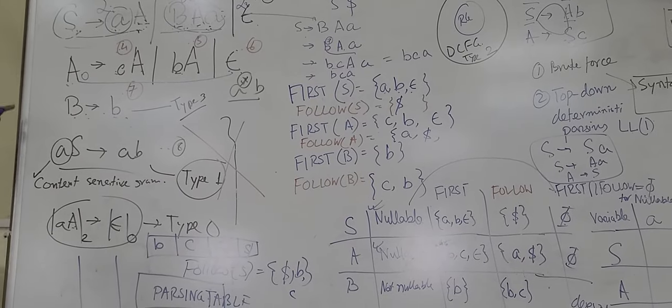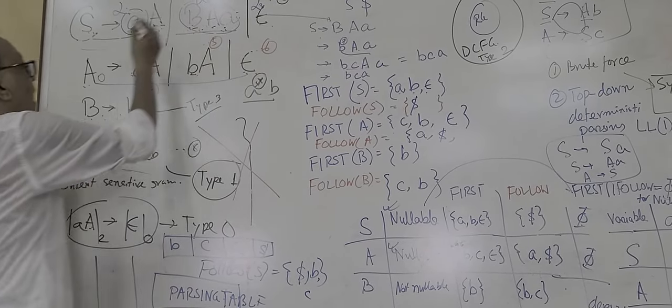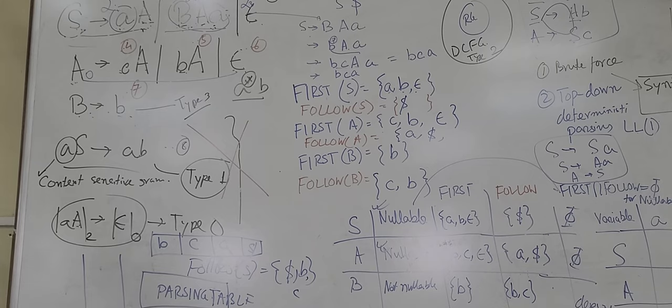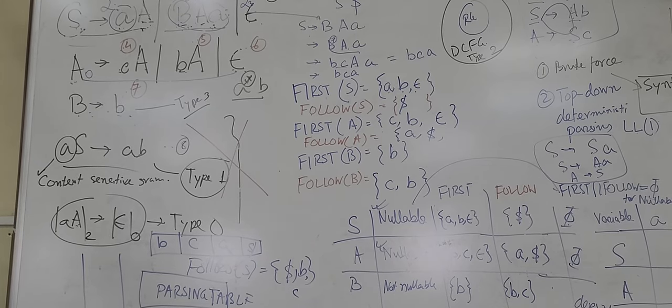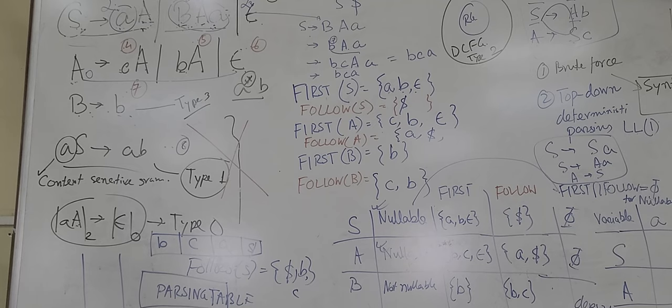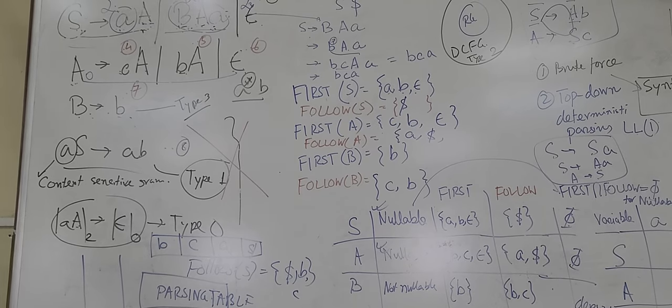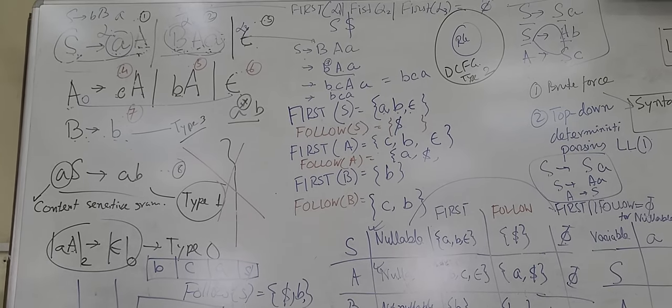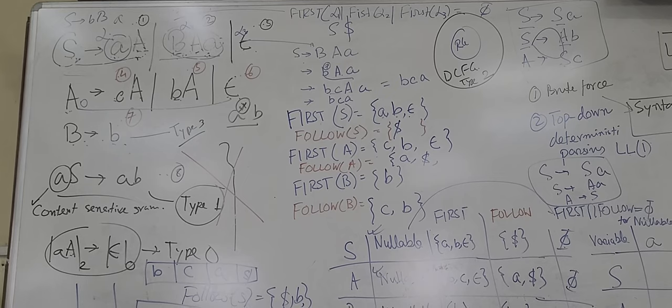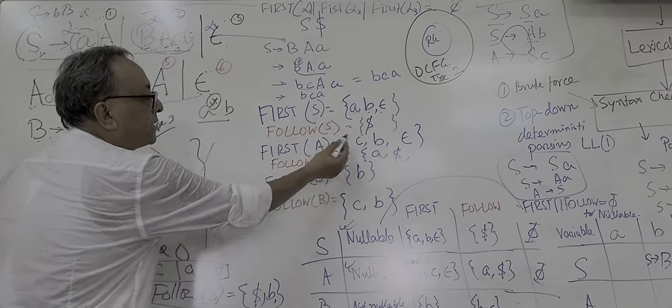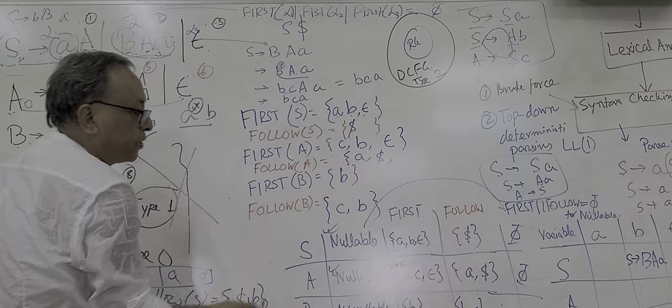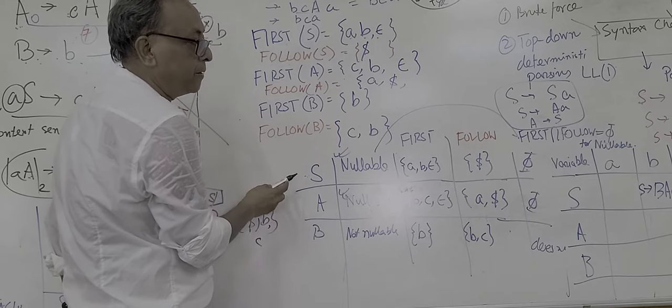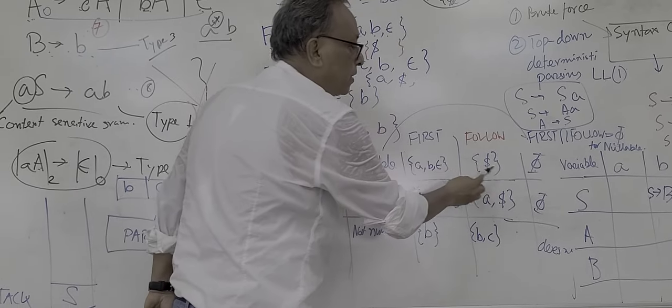Now, we see A goes to epsilon, and A to epsilon. For any variable which goes to epsilon, we have to calculate First of this variable and Follow of this variable, so the intersection should be empty. If it is any common terminal, if they have a First of that variable and Follow of that variable, then it cannot be LL(1) per second. So here we also see First, Follow is dollar. And if we see A is nullable, and Follow is dollar, and First is C, so no problem.